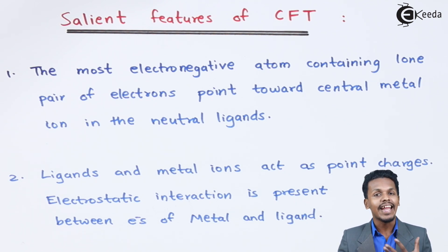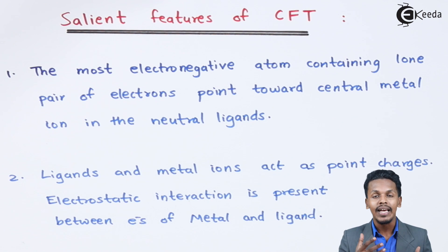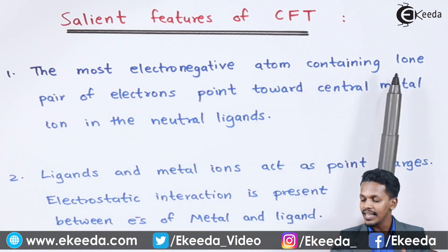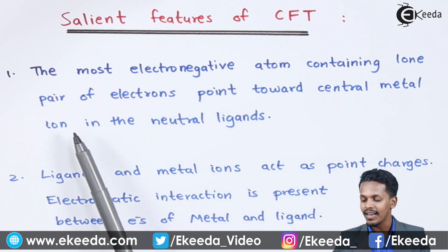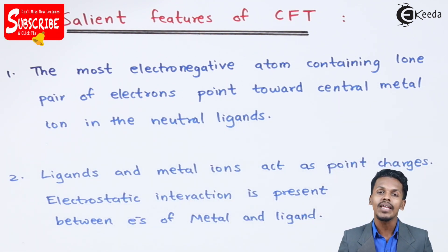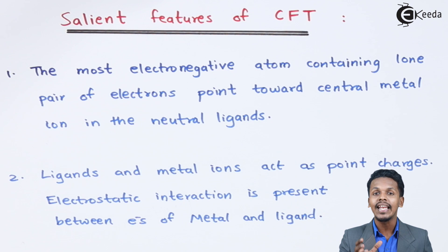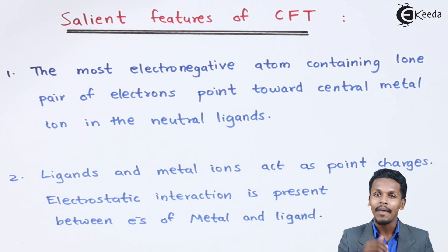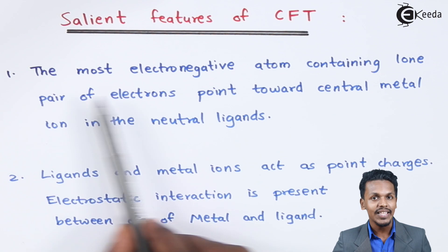Most ligands carry a negative charge, while some are neutral — for example NH3 (ammonia) or carbonyl (CO, carbon monoxide). For a neutral ligand like NH3, nitrogen is more electronegative than hydrogen, so nitrogen shares its lone pair of electrons towards the central metal ion. This is the first point.